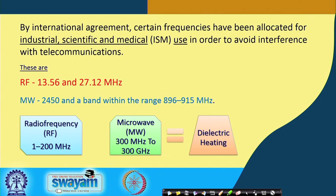For radio frequency heating, 13.56 and 27.12 megahertz frequencies are normally used, or generally within the 1 to 200 megahertz range. Whereas microwave systems used in food processing have a frequency in the range of 2450 megahertz and a bandwidth within the range of 896 to 915 megahertz.